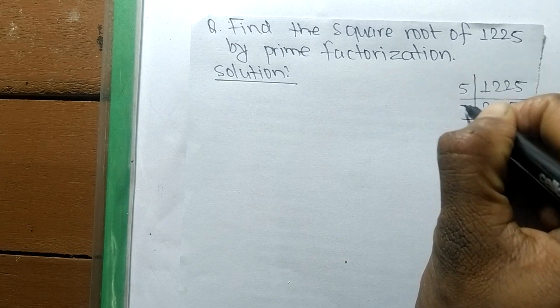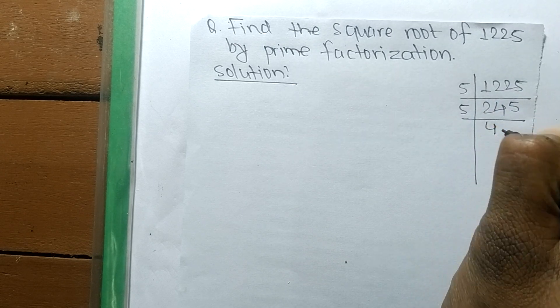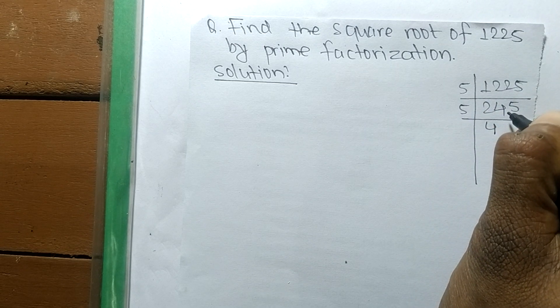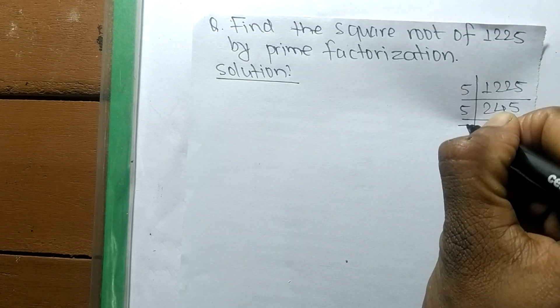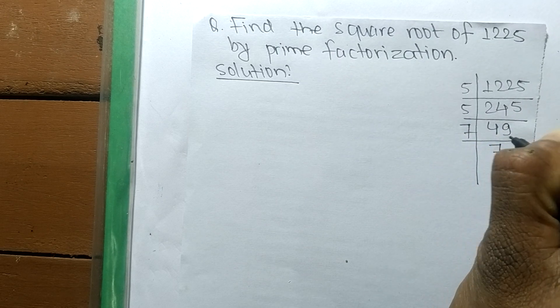Like this, 5 times 4 is 20, remaining is 4. 49 divided by 5 gives 45, 5 times 9 is 45. So it is 7 times 7, which is 49.